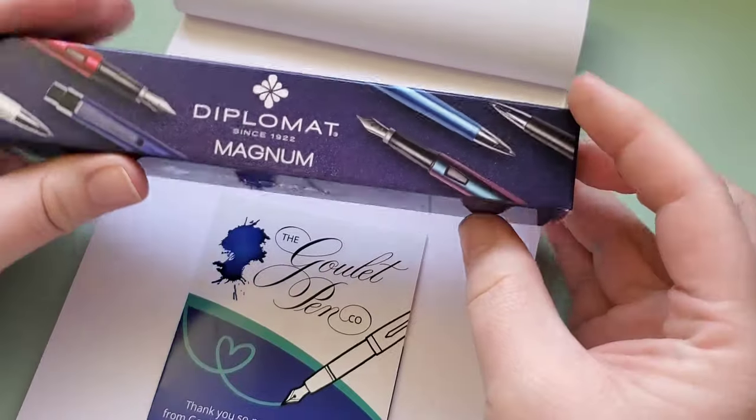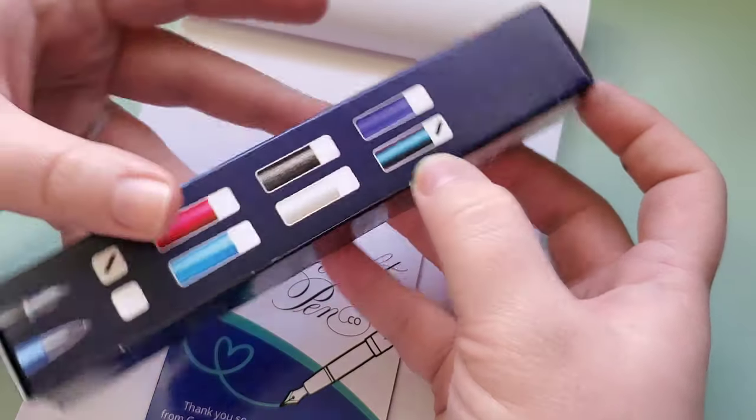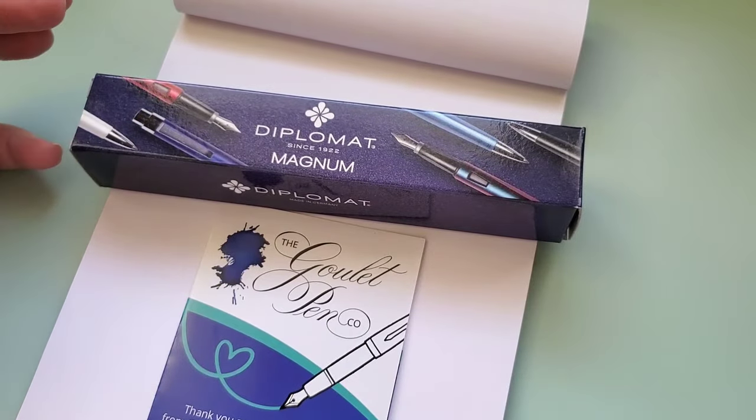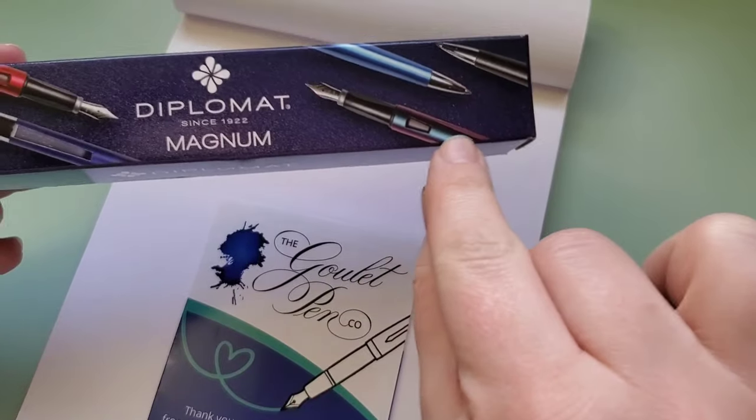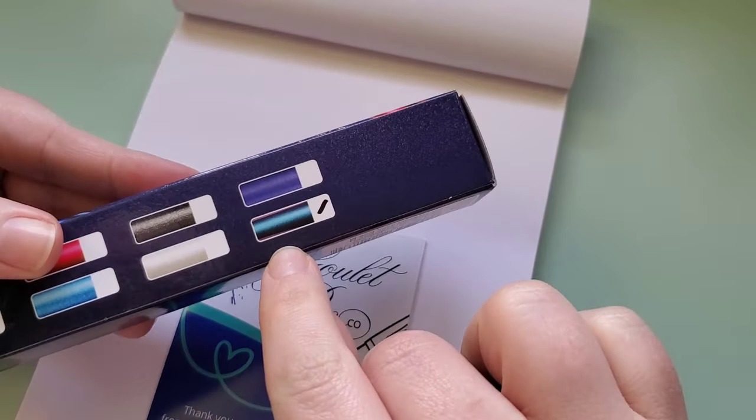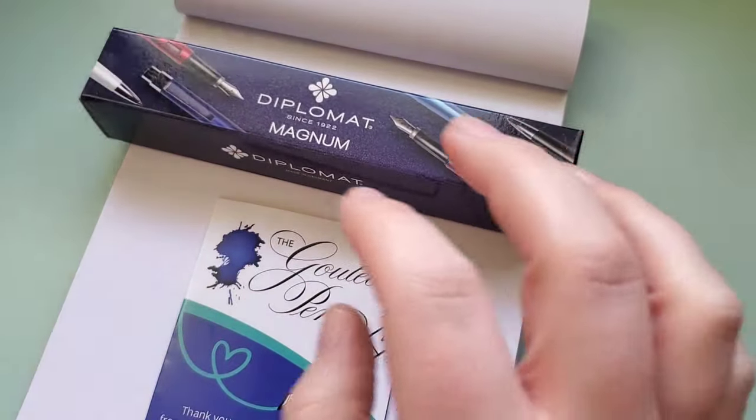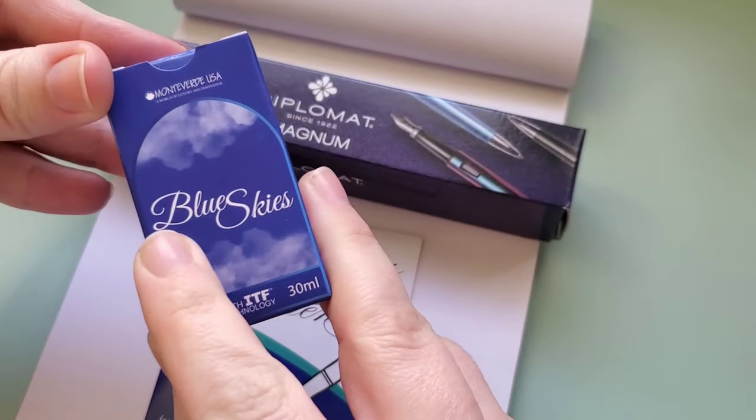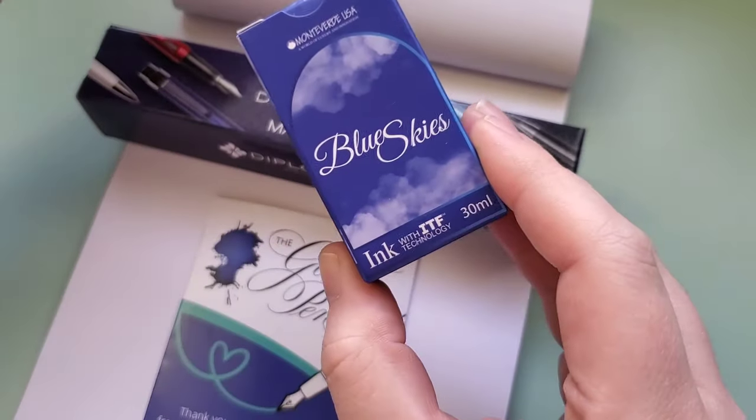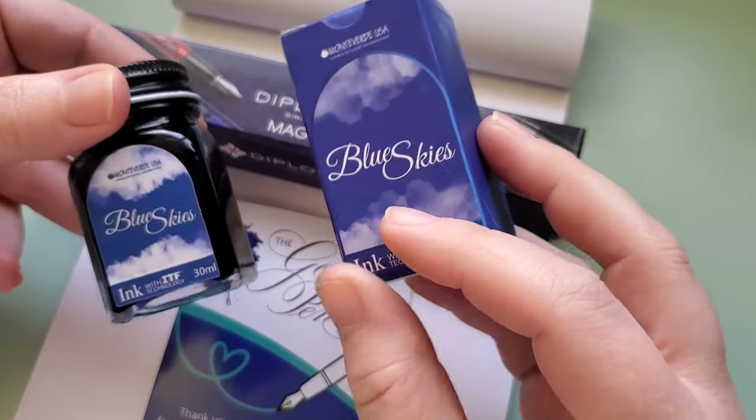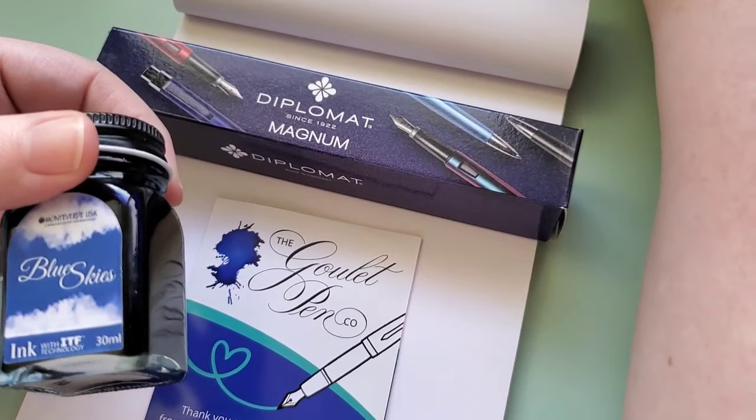So I purchased the Diplomat Magnum, I think it's called Prismatic Purple. So it's this one here on the box. I purchased that, and then with it for free came a 30ml bottle of Monteverde Blue Skies. I thought I saw somewhere that this was maybe a Goulet Pens exclusive, but I don't see that anywhere on the box or the bottle itself, so I could have been wrong about that.